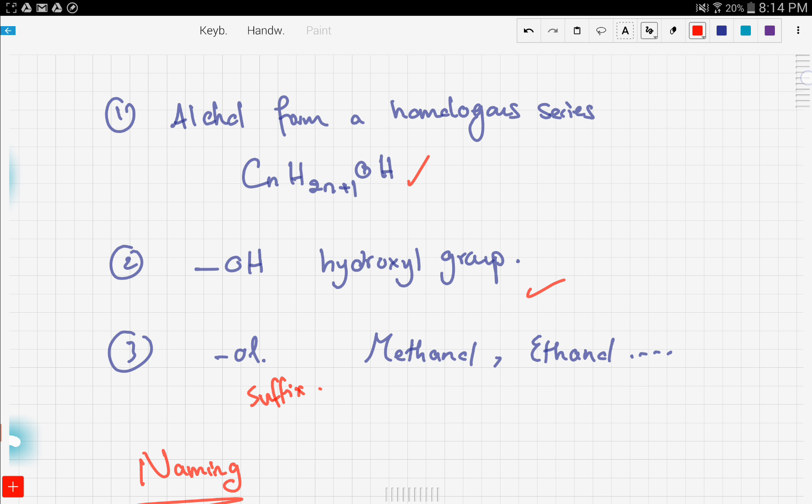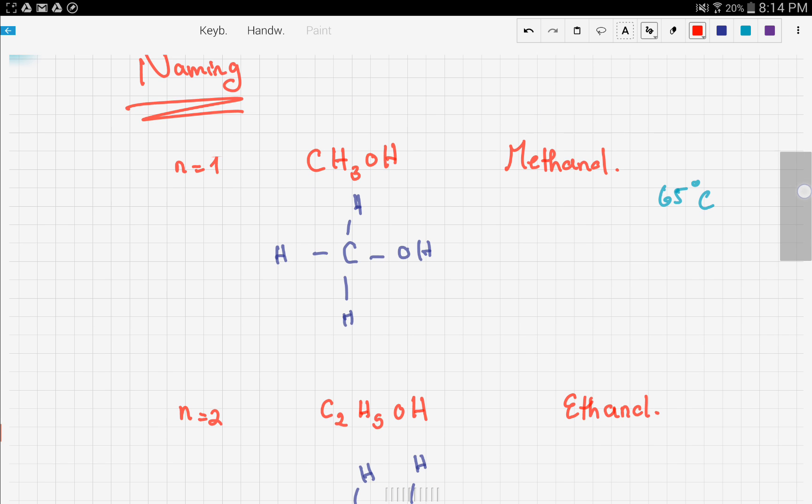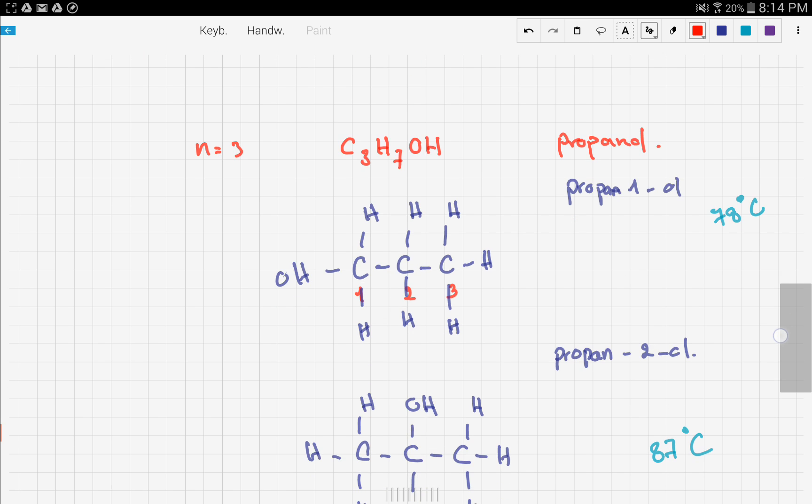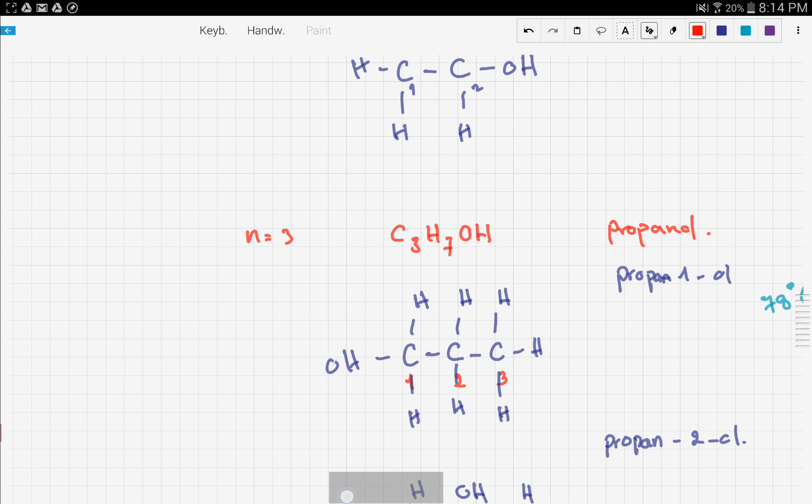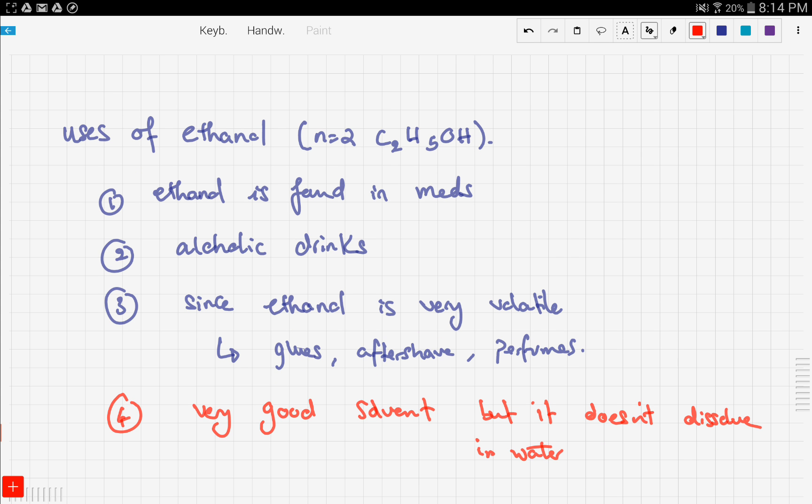We talked about the naming of three different members of the family and we did them right here. And finally, we talked about some of the uses of ethanol and we set three different uses in everyday life and we added a bonus one that's a chemical kind of use.